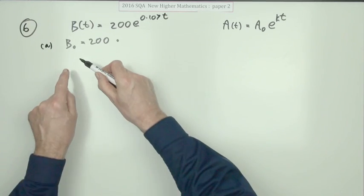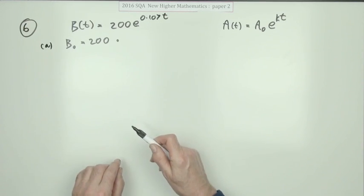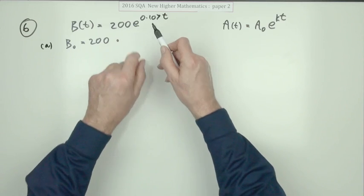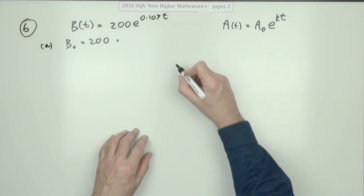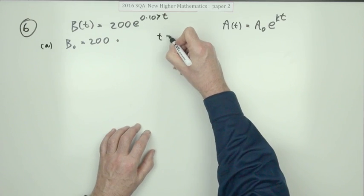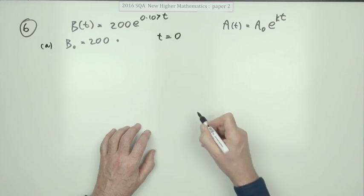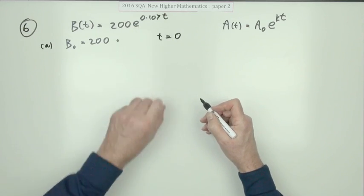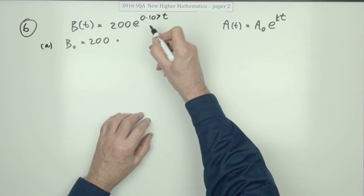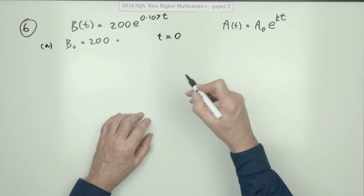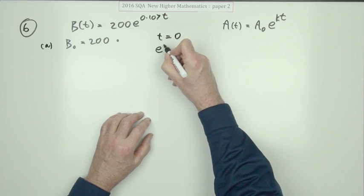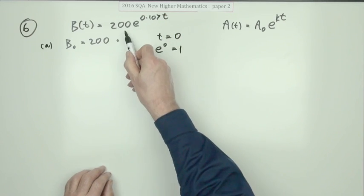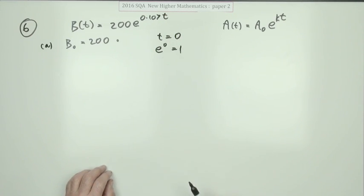If you're unsure of the initial value, simply substitute t equals zero into the equation. Since e to the zero equals one, you're left with just 200.